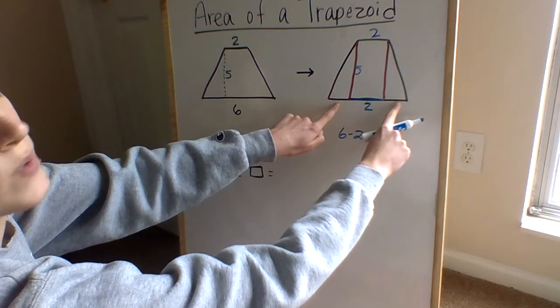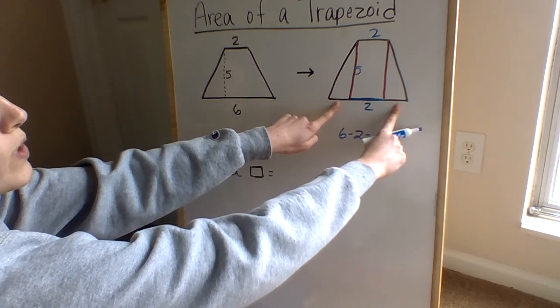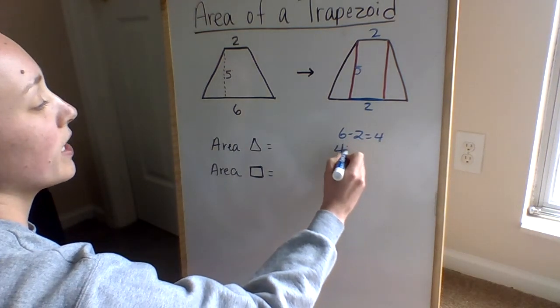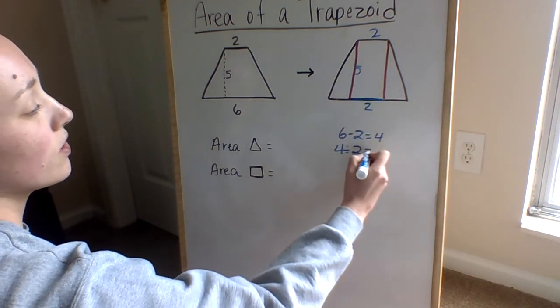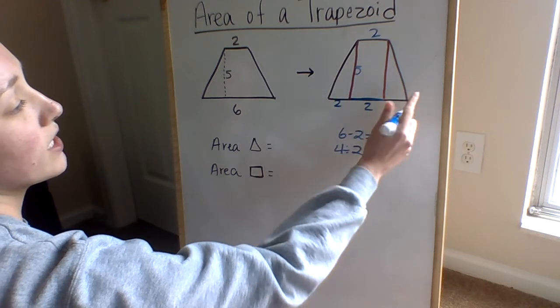So we have four left to split between the two spots here. If we split four into two, what are we going to get? What is four divided by two? Good. Four divided by our two different areas equals two. So this section right here is going to be two, and this section right here is going to be two.